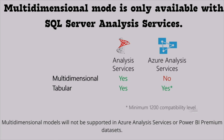There is an important distinction: for on-premise Analysis Services, Microsoft supports both multi-dimensional and tabular data modeling. However, in Azure Analysis Services, multi-dimensional is not an option — multi-dimensional models are not supported in Azure Analysis Services or Power BI Premium datasets. Also remember that you need a minimum compatibility level of 1200 to work with Azure Analysis Services, and you should always try to use the latest version. For this tutorial, we are going to use compatibility level 1500.